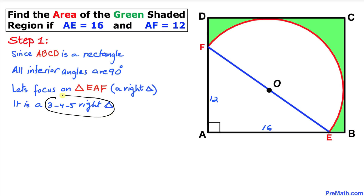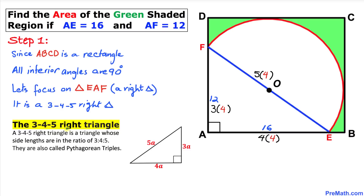A 3-4-5 right triangle is a triangle whose side lengths are in the ratio 3:4:5, also called Pythagorean triples. In our case, AE=16 and AF=12, giving a constant multiple of 4, since 4×4=16 and 3×4=12. The hypotenuse EF will be 5 times 4.